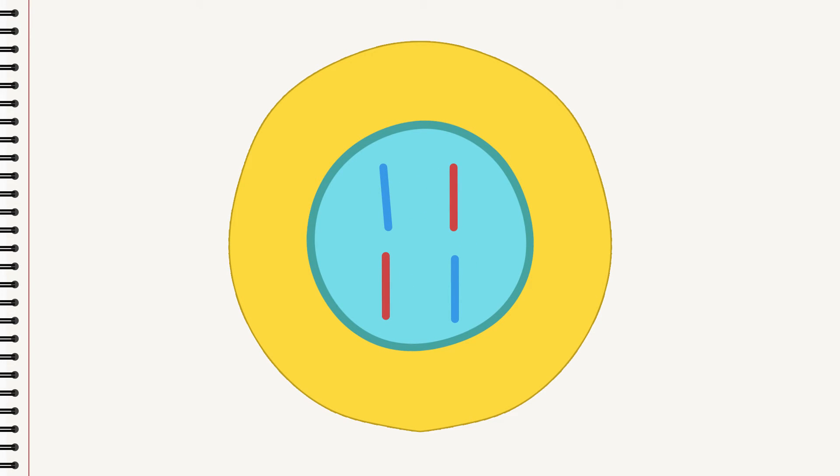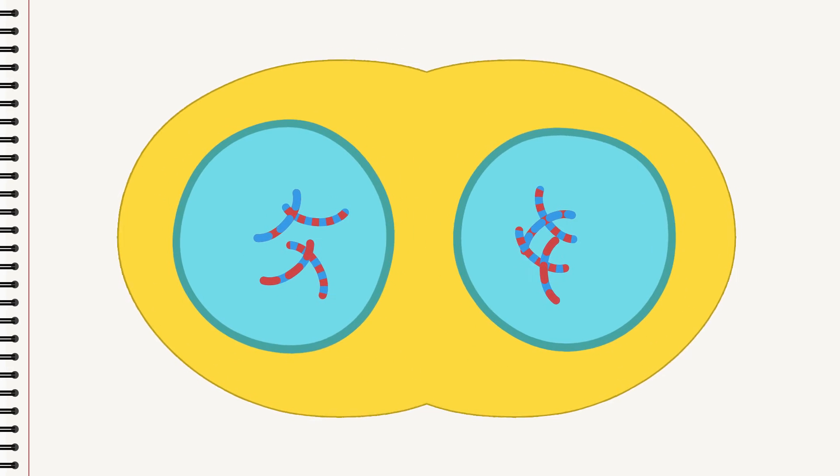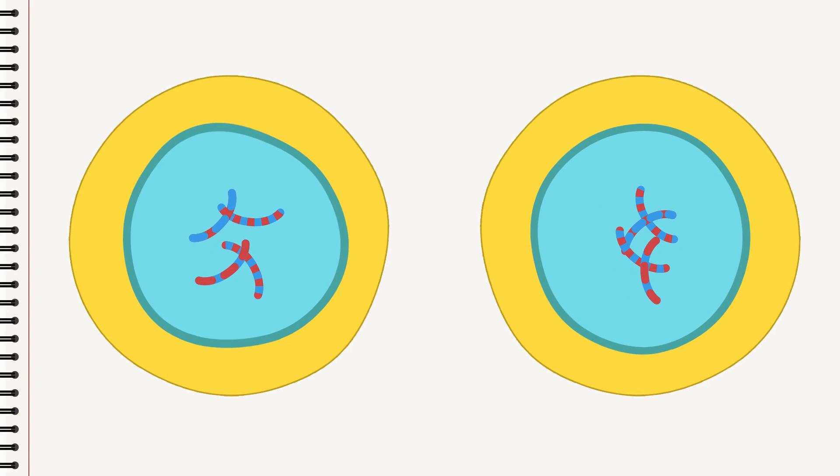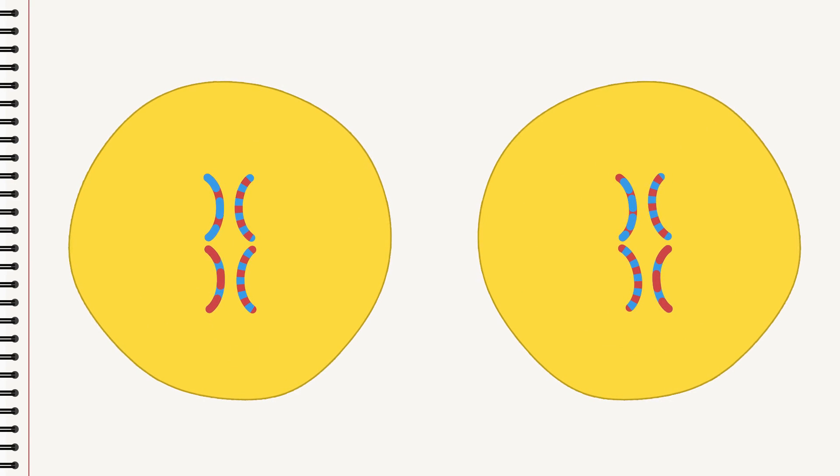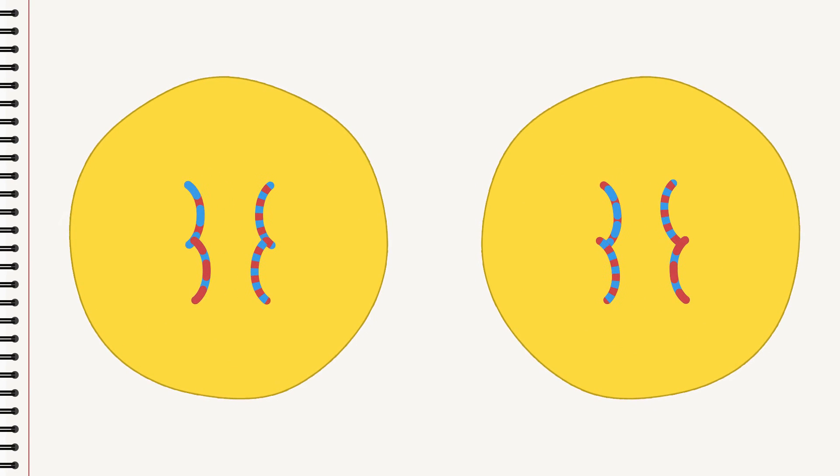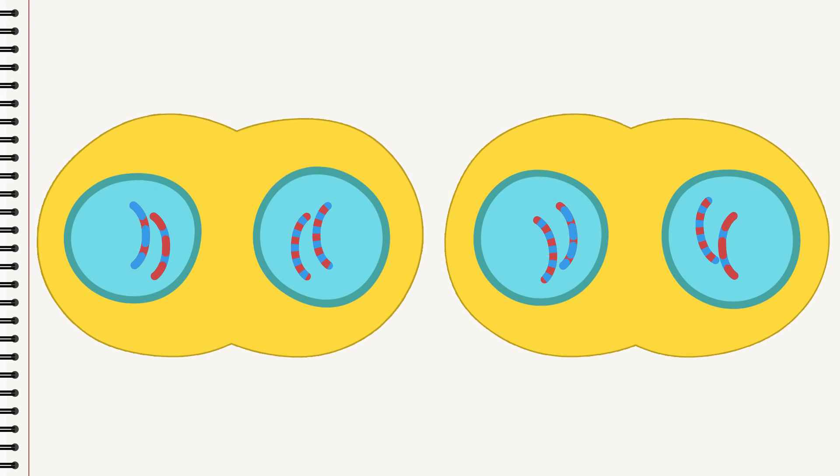The first stage looks similar to ordinary cell division, but there is an important difference: these chromosomes are not exact copies of those of the mother cell. These are brand new, unique chromosomes. And watch—a second division appears. Without the chromosomes becoming more numerous, they are shared out among the new daughter cells.